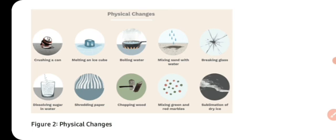Melting an ice cube — ice cube melt hota hai, toh yeh uske state of matter hi change karta hai. Solid se yeh liquid ho jaata hai, toh yeh ek physical change hai. Boiling water — water ko jab boil karte hai, toh paani ka sirf state change hota hai, jo ki ek physical property hai. Mixing sand with water. Breaking glass — glass ko aap break karte ho, toh glass ka shape and size change ho jayega, glass glass hi rahega, koi naya substance nahi banta. Dissolving sugar in water, shredding paper, chopping wood, mixing green and red marbles, sublimation of dry ice — these are some examples of physical changes. Here you can see no new substance is forming.